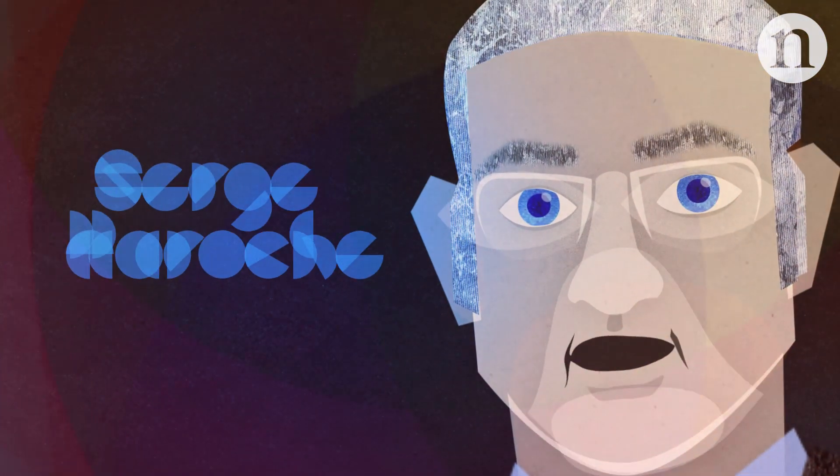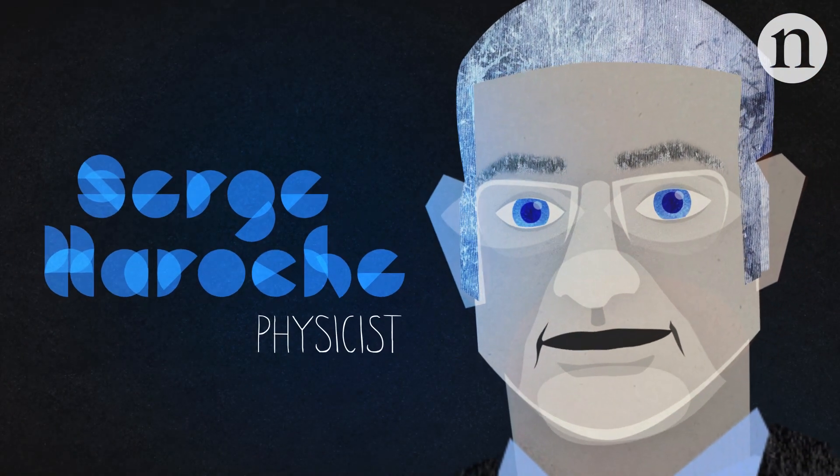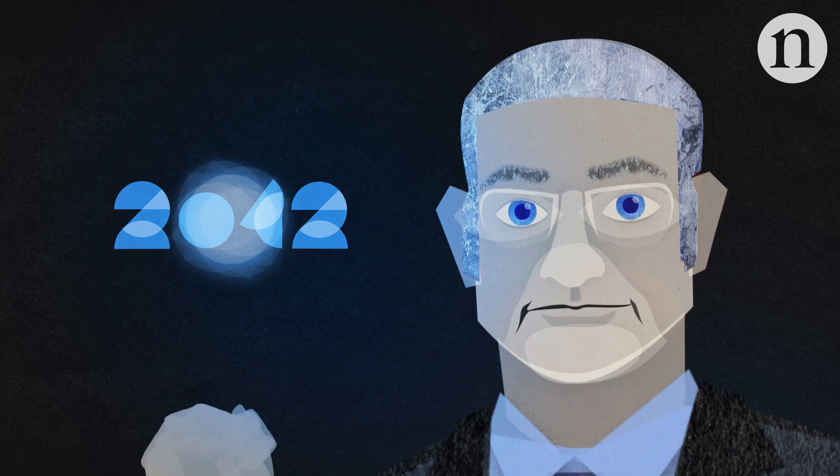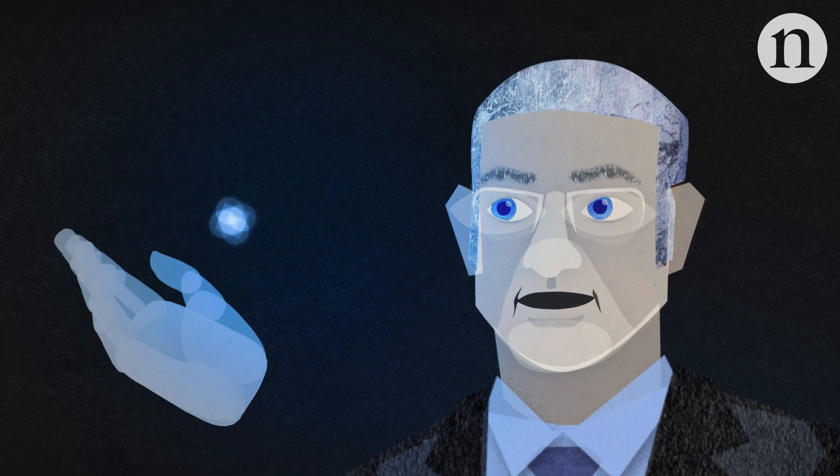My name is Serge Aroche and I'm a physicist. I got the Nobel Prize in 2012, and it was for the manipulation of individual quantum systems.